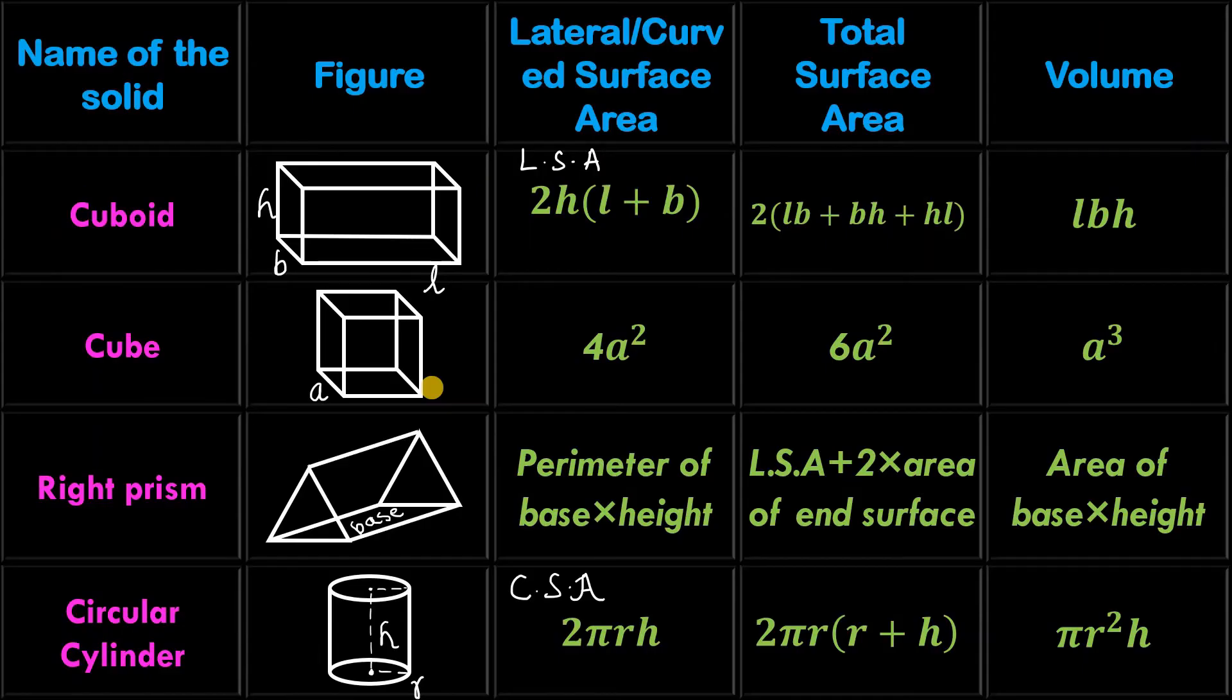These are very important formulas. You all know this cuboid. Its shape is this. Lateral surface area or curved surface area - it's a solid shape without any curves, so here we will consider LSA. That means lateral surface area. That is 2H into L plus B. Its total surface area is 2 into LB plus BH plus HL.